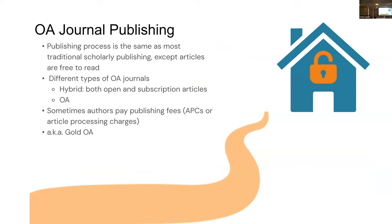One of the biggest questions I get around open access journal publishing is how it differs from publishing in a traditional paywall journal. The answer is it's not really that different — the difference is simply that your work is openly available. There are myths that open access journals aren't peer-reviewed, but that's not true; they go through the same review processes as traditional publishers. The experience will feel very similar to publishing in a traditional journal.